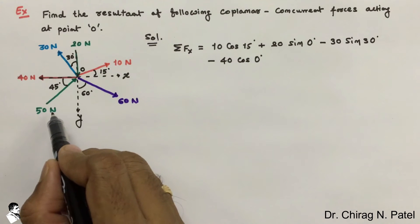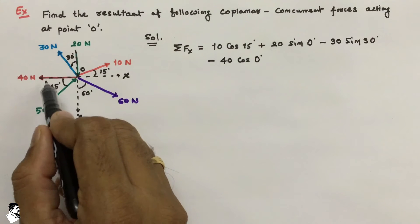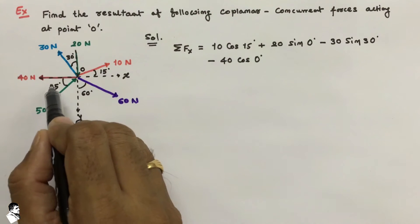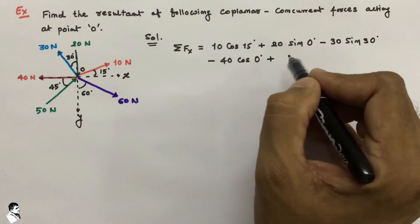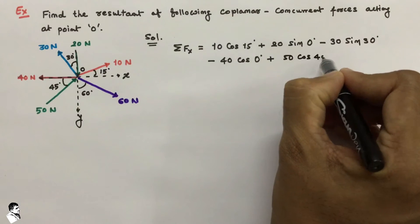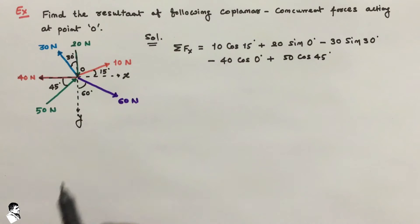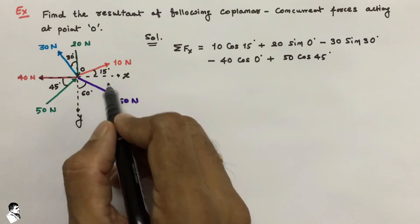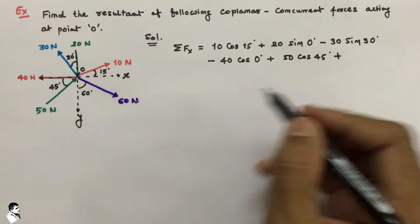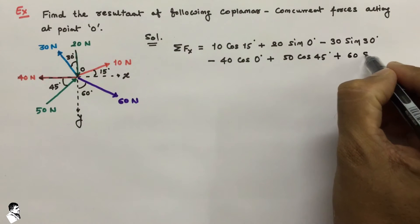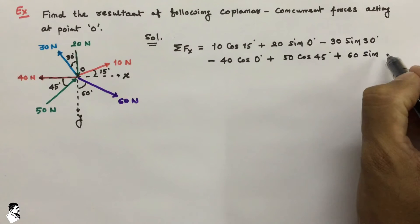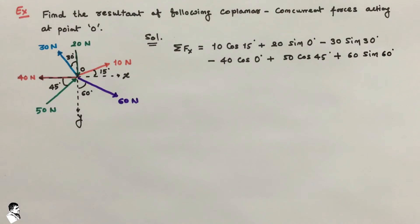For the 50 Newton force resolved along the X axis: the component is 50 cos 45 degrees, with a positive sign because it is along the positive X axis. For the last force, 60 Newton, it is also in the positive X direction. The angle given is between the force and the Y axis, so we use sine — that is 60 sine 60 degrees.